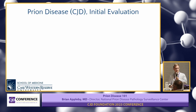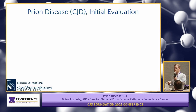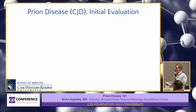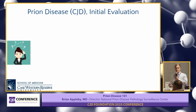I'm going to run you through a sample initial evaluation of a prion disease patient. This is someone coming to a memory clinic because they have problems or changes in their memory. The patient complains of memory problems.